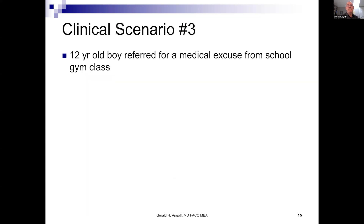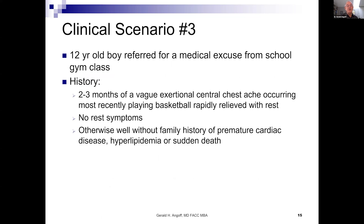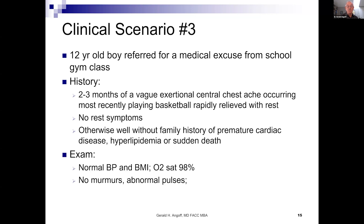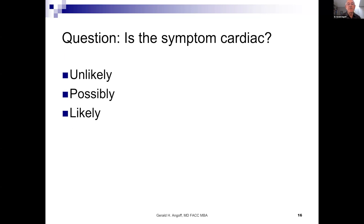Clinical scenario number three: a 12-year-old referred for a medical excuse from school gym class. His history: two to three months of vague exertional central chest ache, occurring most recently while playing basketball, rapidly relieved with rest, no resting symptoms, otherwise well, without a concerning family history. His exam was completely normal and his EKG was normal. Do you think it's unlikely, possibly, or likely that this might be cardiac? A majority felt it was possibly cardiac.